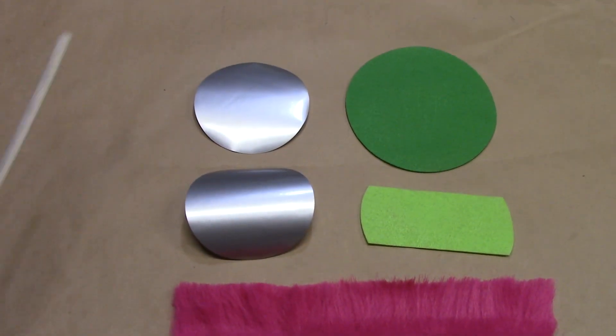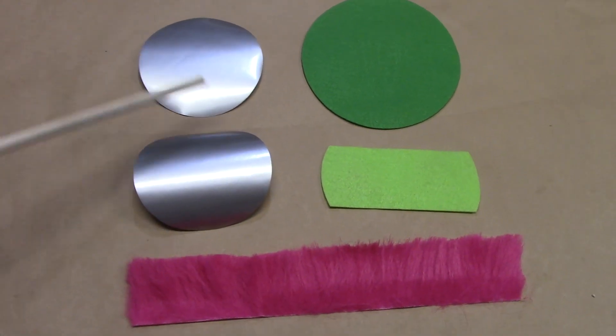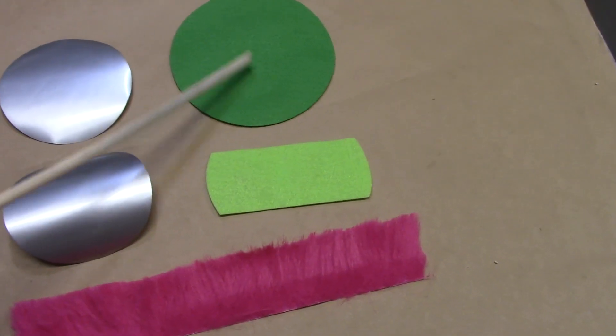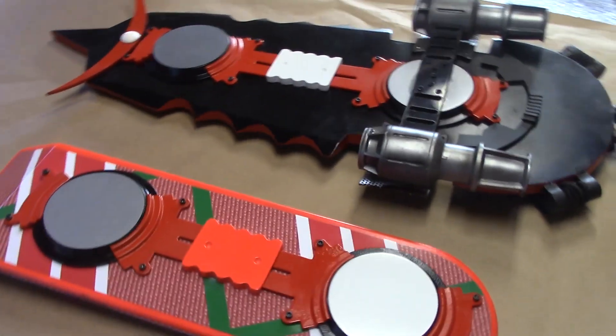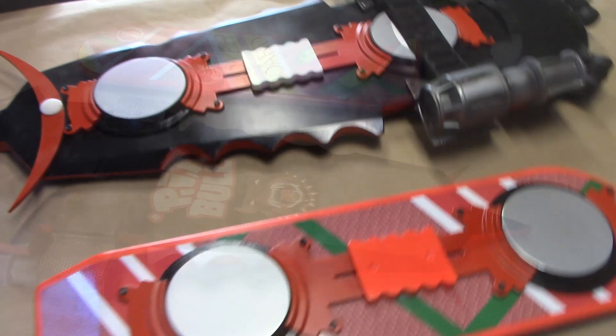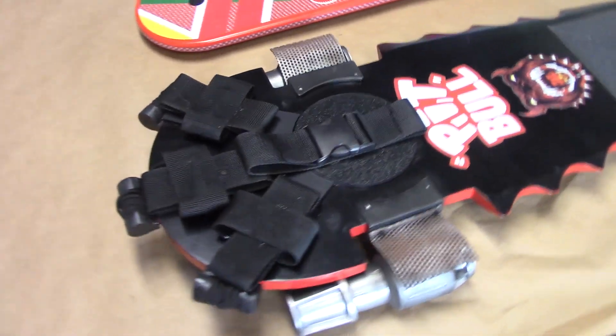And here are your add-ons for the Marty hoverboard, your two vinyl silver covers, green fabric, lighter green fabric, and the fuzzy pink foot strap. You can visit these replicas and see how they were made at my website. You can also visit my Instagram and Facebook page. Thanks for watching.